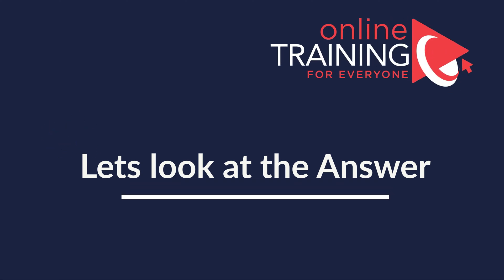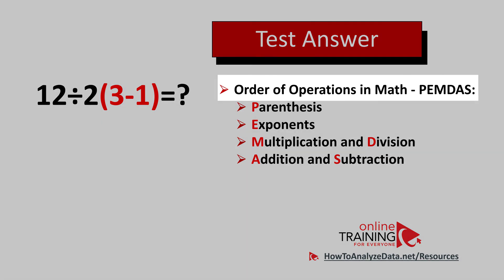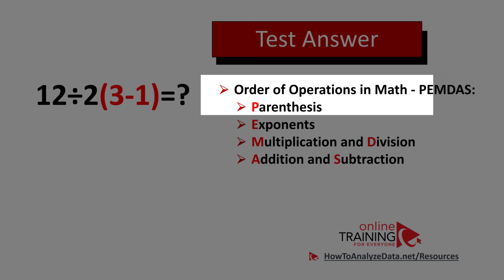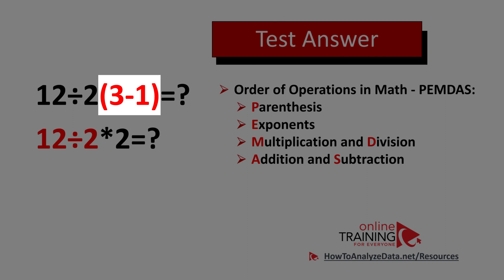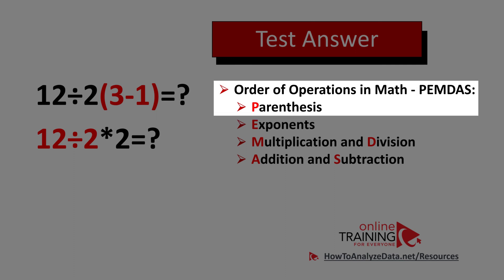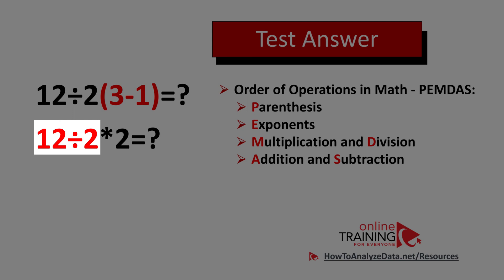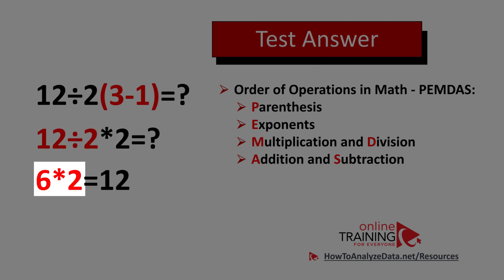The order of operations tells us to solve the expression in parentheses first: 3 minus 1 equals 2. Next, PEMDAS tells us to do multiplication and division, but importantly, we do them from left to right. Even though PEMDAS lists multiplication before division, in our case we need to do division first — divide 12 by 2 to get 6.